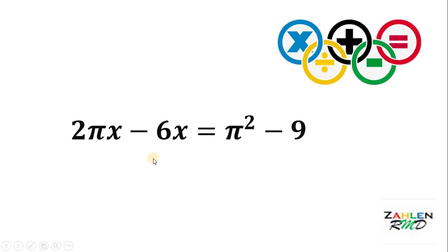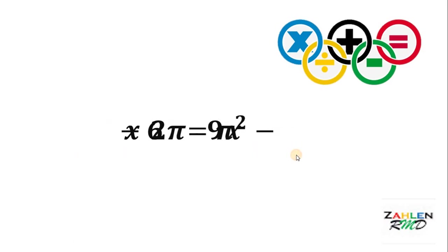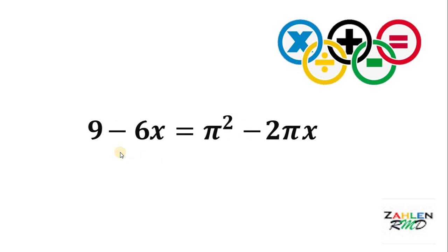Next, we subtract 2 pi x on both sides and add 9 to both sides. If we do that, we get 9 minus 6x equals pi squared minus 2 pi x.